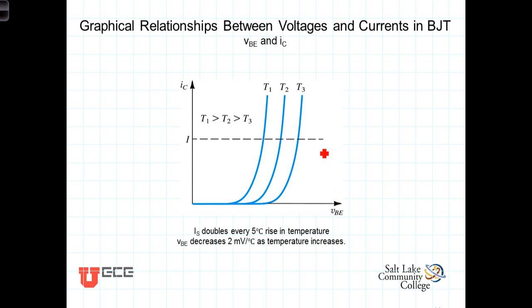We see basically that same characteristic here in these graphs, because once again, the currents, meaning the terminal currents, are functions of VBE, exponential functions of VBE, just like the diode, because they are related to that PN junction.